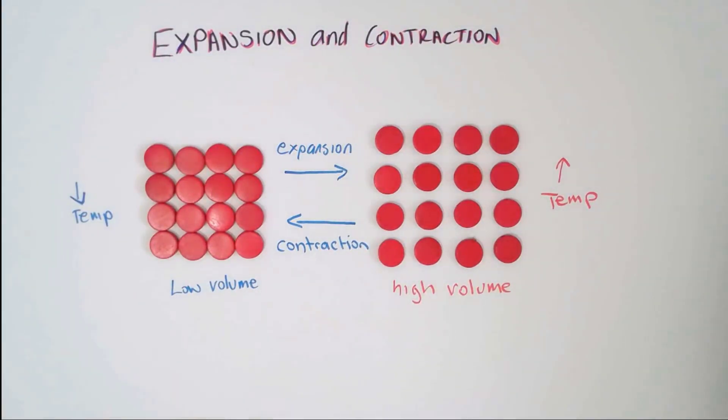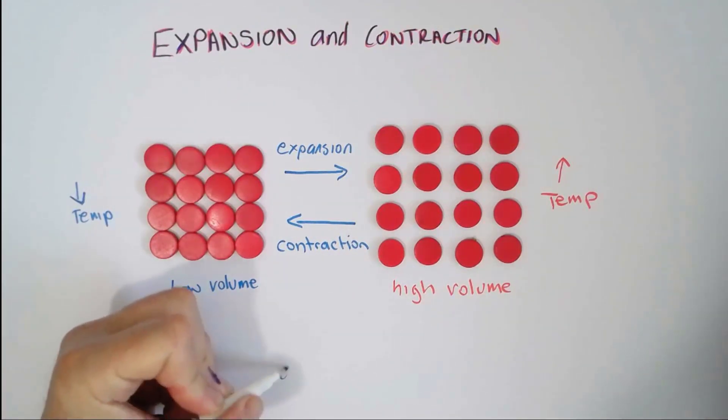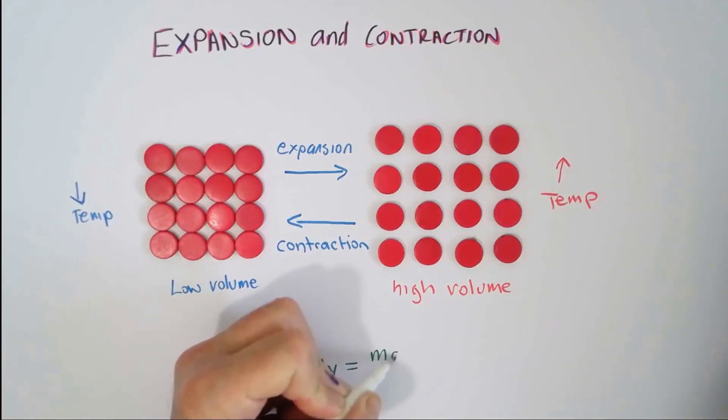There's one more relationship we can talk about as well, and that relates to density. So, density is a measure of the volume per unit area. So, density is equal to the mass divided by the volume.